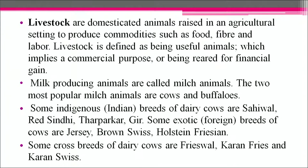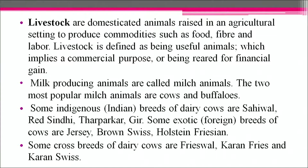Livestock are domesticated animals raised in an agricultural setting to produce commodities such as food, fiber and labor. Milk-producing animals are called milk animals; the two most popular are cows and buffaloes. Some indigenous Indian breeds of dairy cows are Sahiwal, Ratsindhi, Tharparkar and Gir. Exotic or foreign breeds include Jersey, Brown Swiss, Holstein and Friesian. Crossbreeds include Frieswal, Karan Fries and Karan Swiss. High milk-yielding breeds of buffaloes are Murrah, Surti and Mehsana.